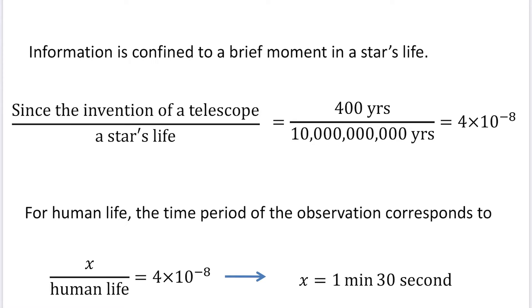First topic is the information of stars. Information is confined to a brief moment in the stars' life. Galileo developed a telescope and started to observe stars 400 years ago. Compared with a star's life, 10 billion years, our observation time is 400 years over 10 billion years.